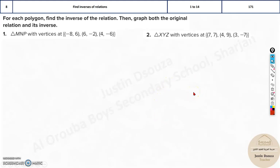The eighth topic is to find inverse of relations. There are two types of problems. The first type is very easy, where coordinate points are given. For example, you have been told the vertices minus 8, 6, 6, minus 2, 4, minus 6 are of a triangle.